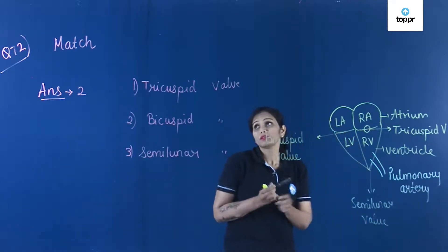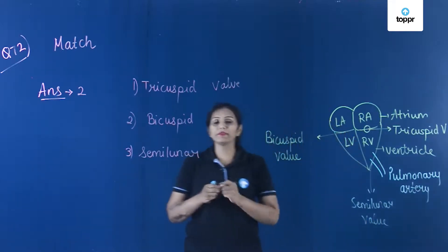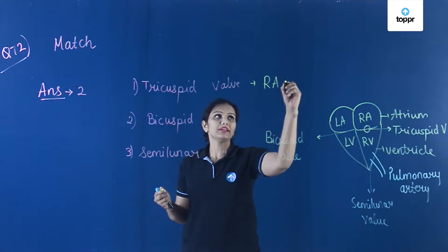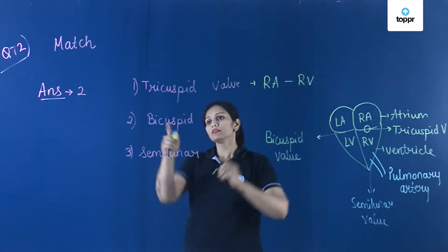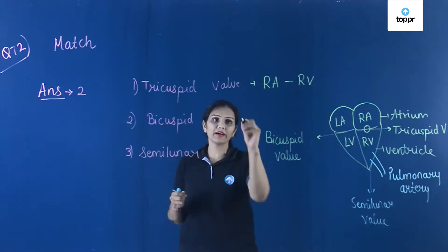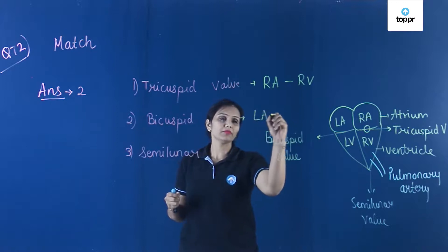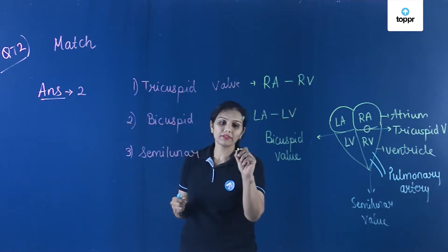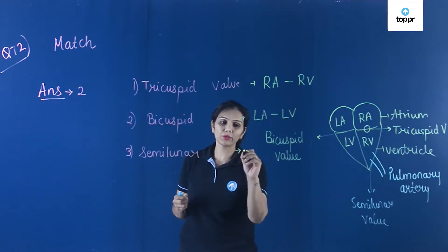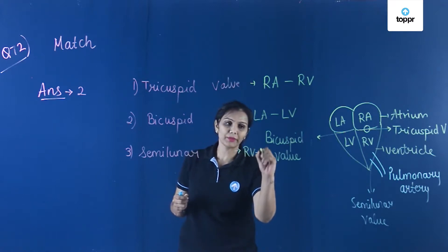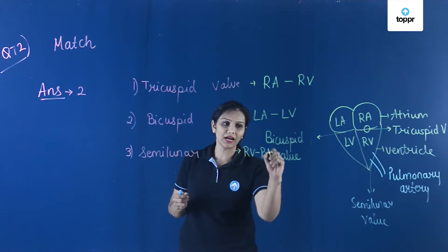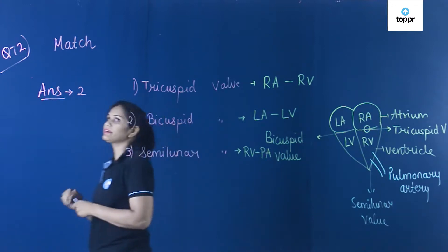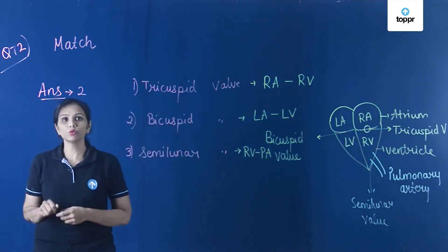So to summarize: the tricuspid valve is present between the right atrium and right ventricle, the bicuspid valve between the left atrium and left ventricle, and the semilunar valve is present between the right ventricle and pulmonary artery. So the correct option to question number 72 is option 2.